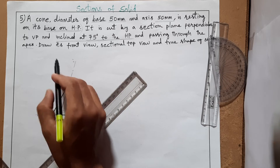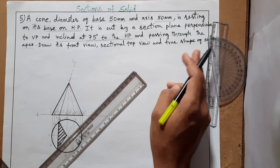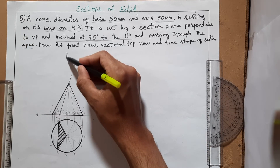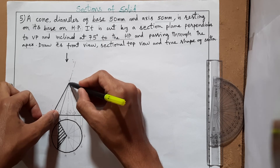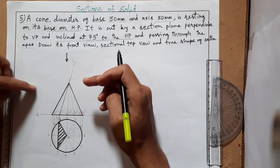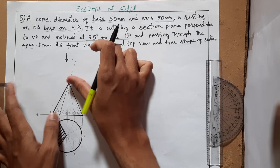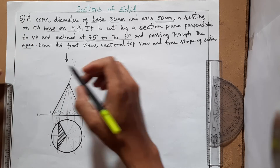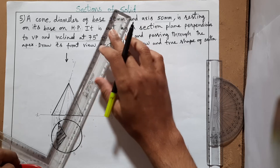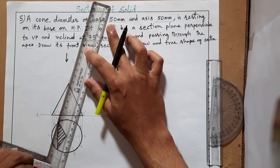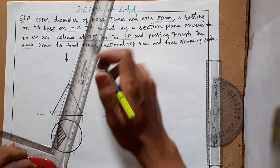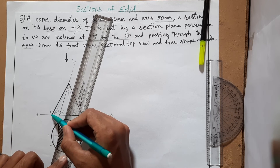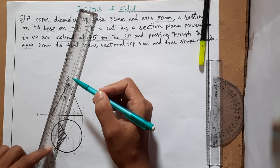The front view and sectional top view are completed. Now we need to draw the true shape of the section. From the top view, the actual shape is foreshortened, so we look parallel to the cutting plane to get the true shape. Draw a new reference line X-dash Y-dash parallel to the cutting plane in the front view, at any convenient distance, ensuring it does not touch the corners of the front view.